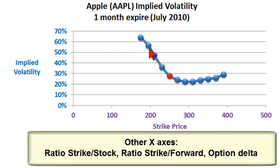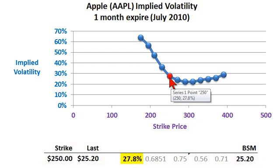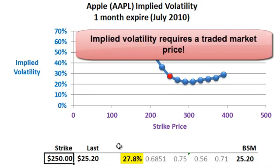I plotted this volatility smile, and I'm going to isolate on just one point to show how I got that. First of all, the most important thing is I looked at actual traded options and their trading prices. For example, as of yesterday, an option on Apple's stock with a strike price of $2.50 — this happens to be a call option, but I could have done put options as well — happened to trade last at $25.20.